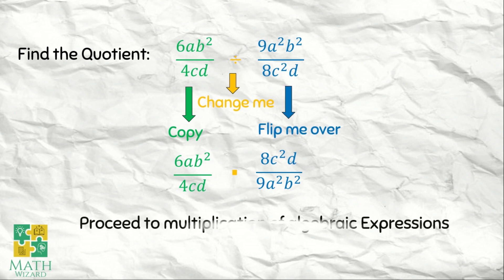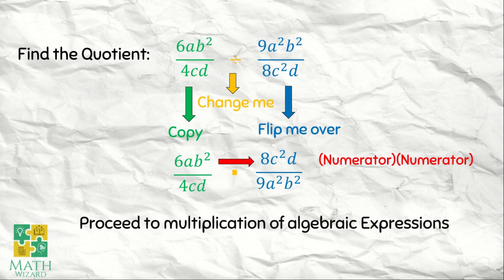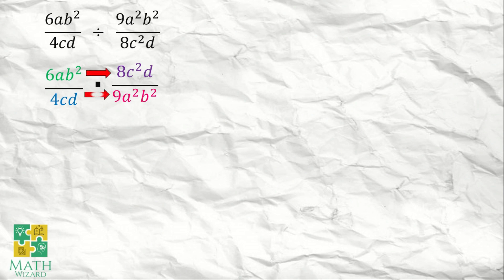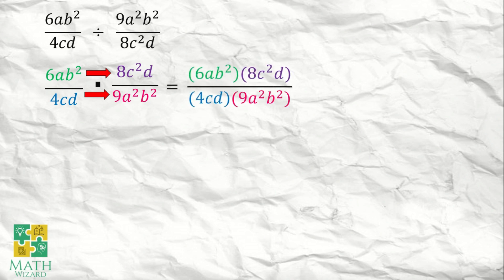After that, we need to proceed to multiplication of algebraic expressions. How do we multiply? That's numerator times numerator, and then denominator times the denominator. So this becomes 6ab squared over 4cd multiplied by 8c squared d squared over 9a squared b squared. Multiplying that: numerator times numerator, denominator times denominator — this becomes 6ab squared times 8c squared d over 4cd multiplied by 9a squared b squared.